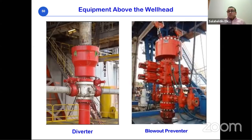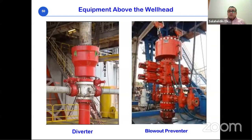The controlling or well control system is one of the most important rig systems. The primary control on any well is the hydrostatic pressure of the drilling fluid — it is the mud engineer's main responsibility to design drilling fluid with sufficient density to control formation pressure. The equipment is secondary control. There are two categories of well control equipment: diverters and blowout preventers.